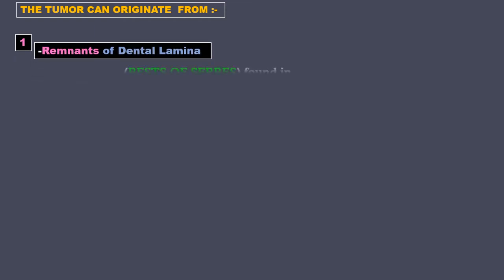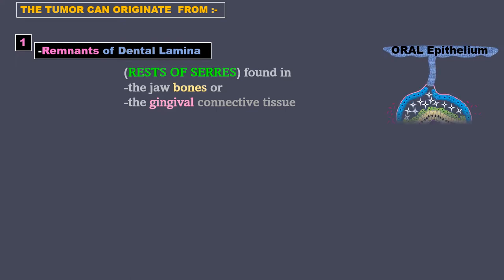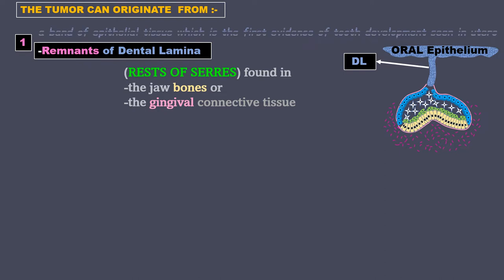The tumor can originate from remnants of dental lamina. These are called the rest of Serres, found remaining in the jaw bones or the gingival connective tissue. This is the oral epithelium. Here you have the dental lamina — it is a band of epithelial tissue which is the first evidence of tooth development seen in utero.